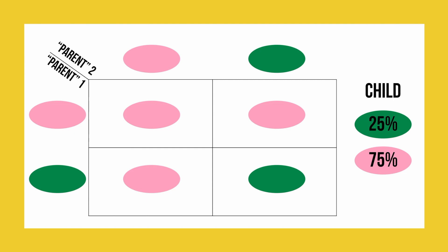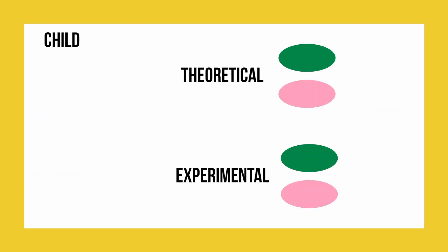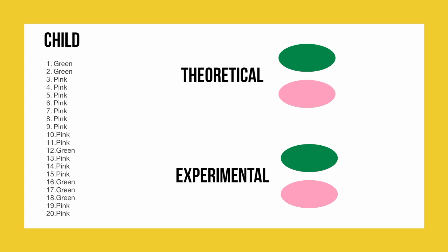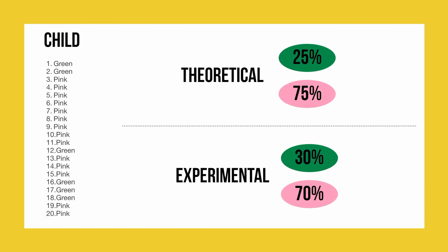These are our theoretical values, so let's see how well they match up to our experiment. On the left, I wrote the results we had for the child. Our theoretical Punnett square tells us that there's a 25% chance that the child has a green gene and a 75% chance of the child having a pink gene. Looking to our experimental values, we see that 30% of the children had a green gene and 70% had a pink gene. Because there is not a huge difference between our theoretical and experimental value, I can say that our experimental value is accurate.